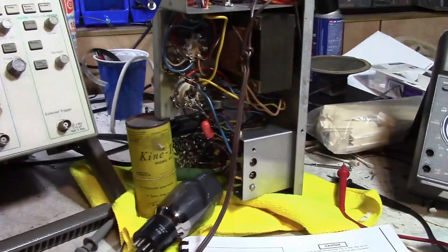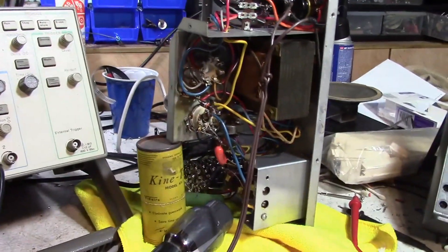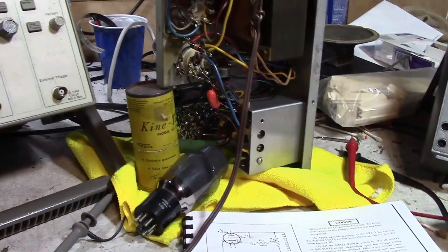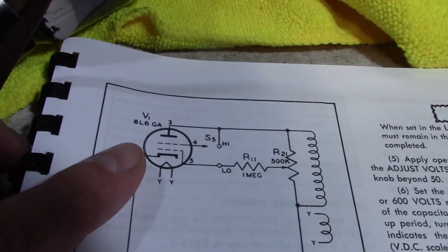Once again, I am running this on 117 volts or less. The output voltage is not higher because I'm running it on a higher line voltage. As a number of you pointed out, this does call for a 6L6GA, and that is not what is in there.